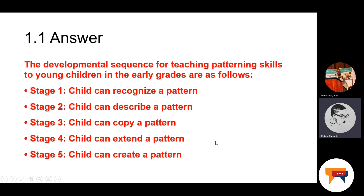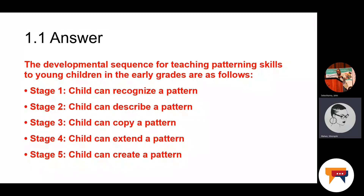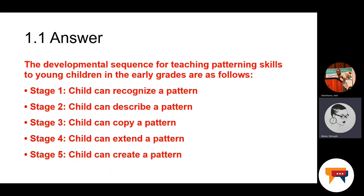The first thing you had to do was briefly name each stage. The developmental sequence for teaching patterning skills to young children in the early grades are as follows. First stage: the child can recognize a pattern. Second stage: a child can describe a pattern. Third stage: a child can copy a pattern. Fourth stage: a child can extend the pattern. And the last one: a child can create their own pattern.